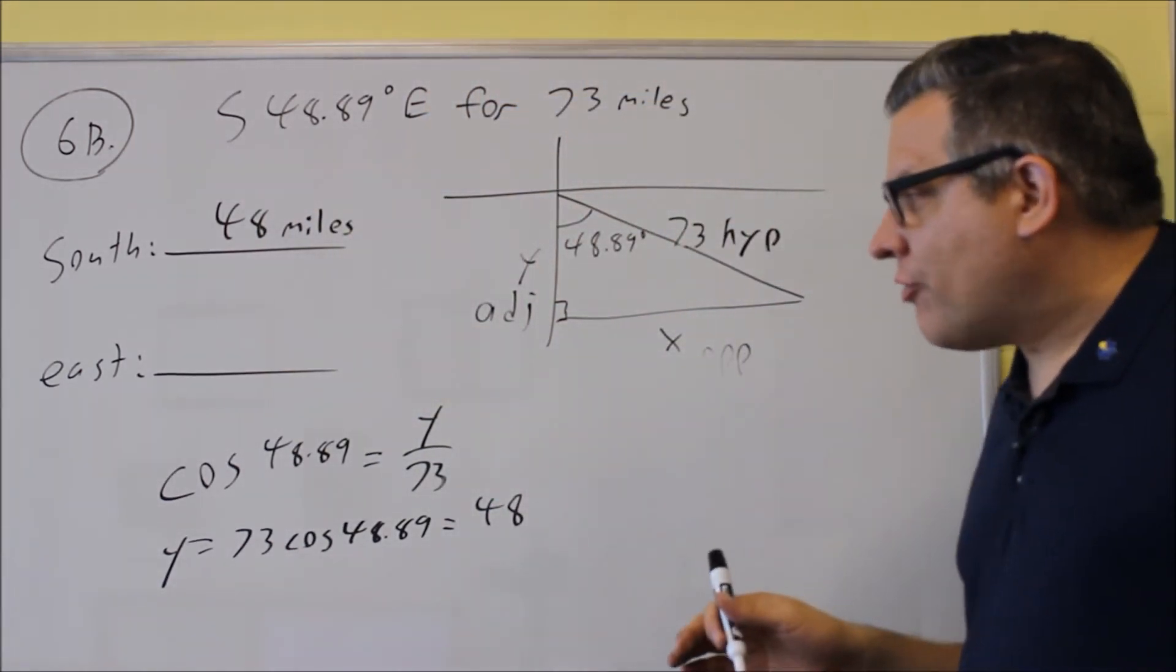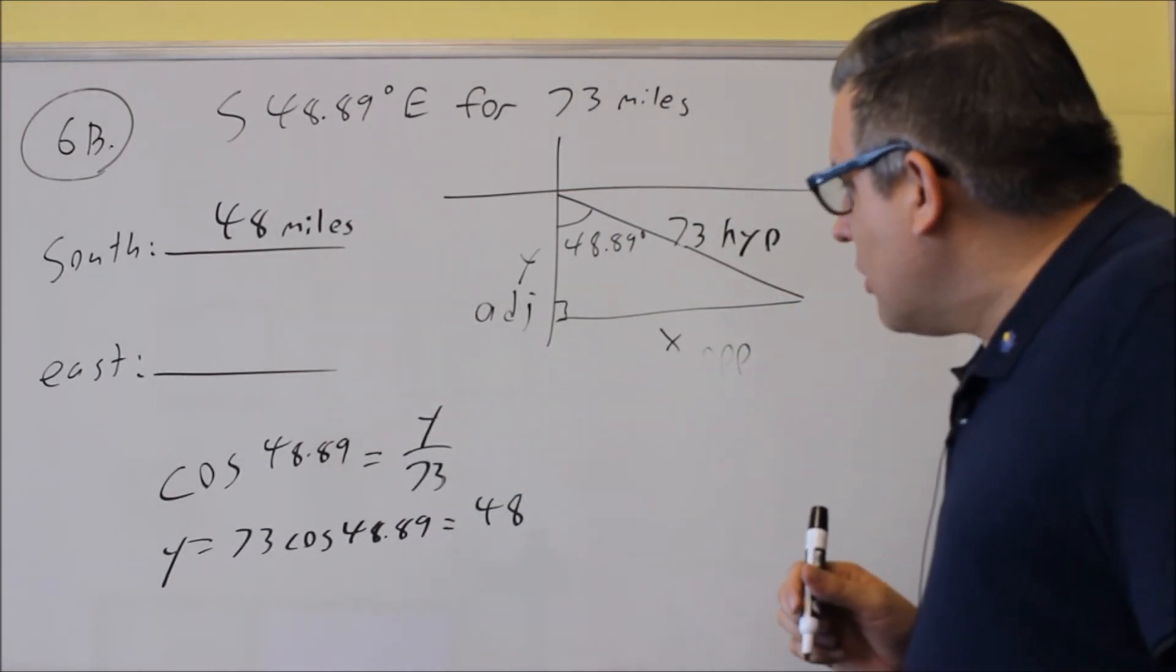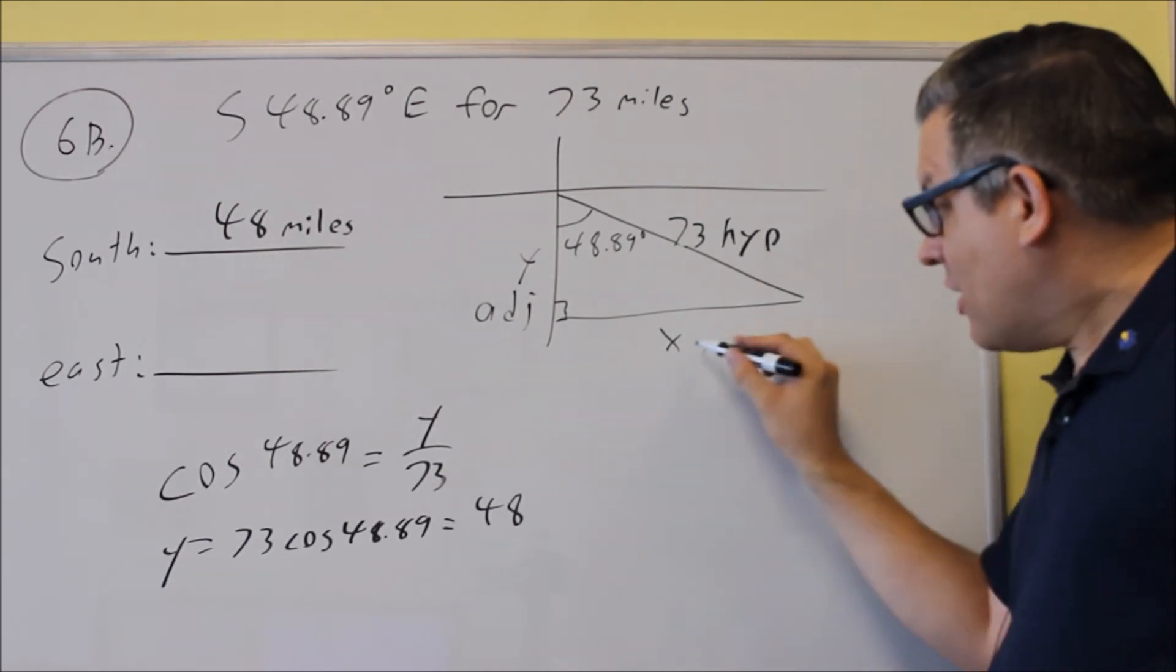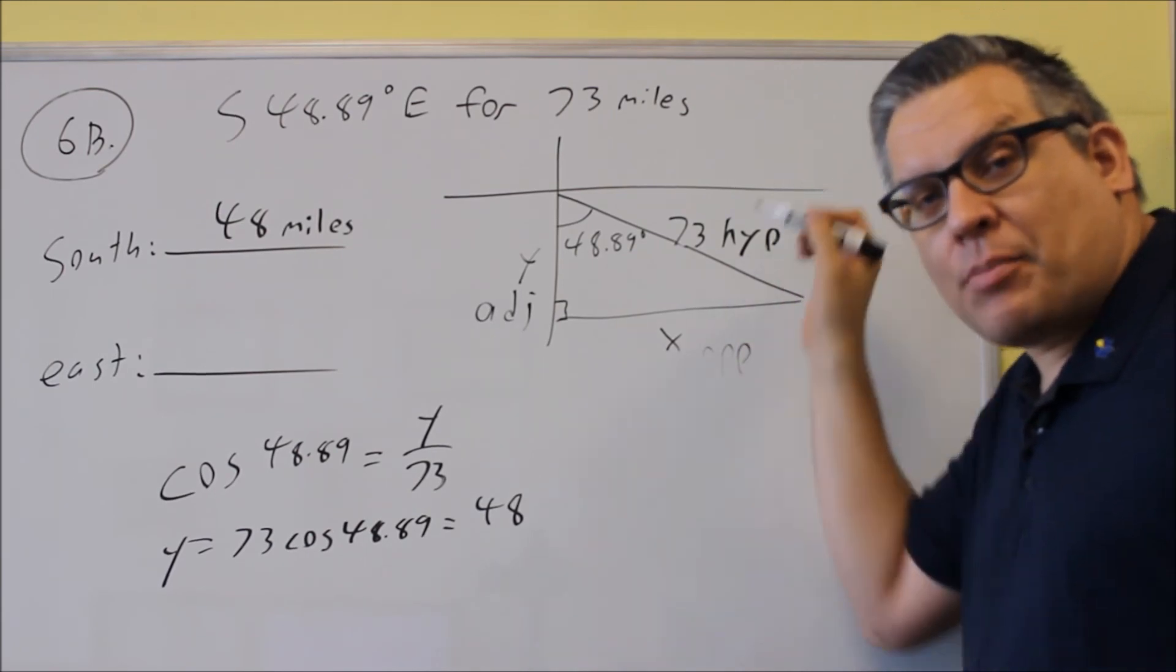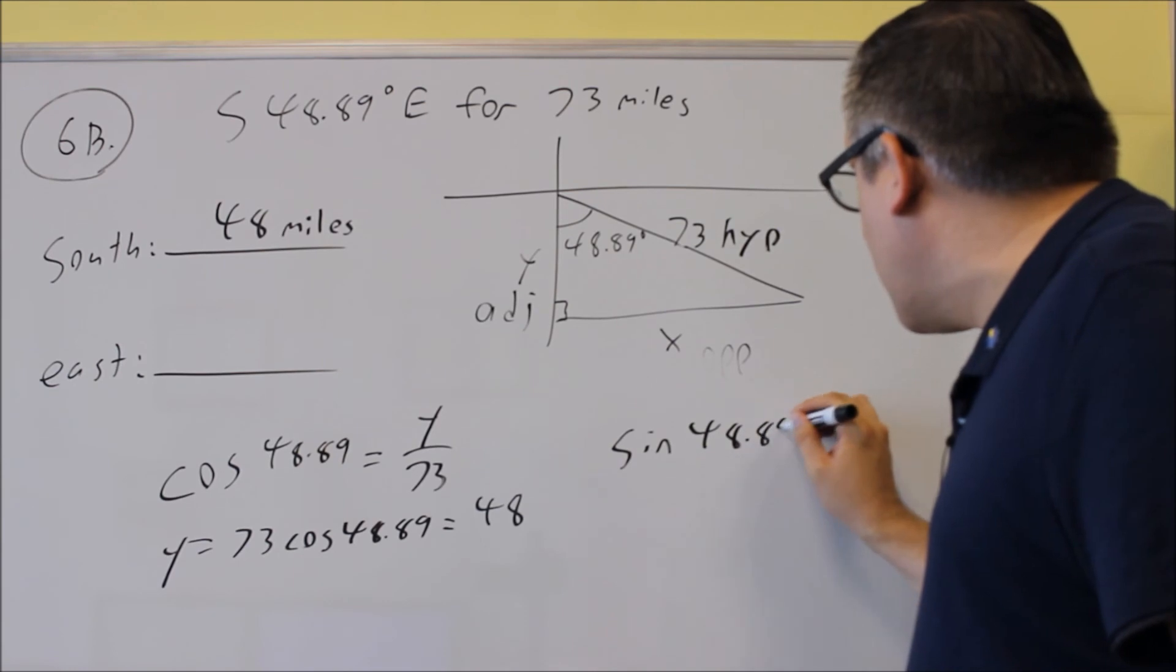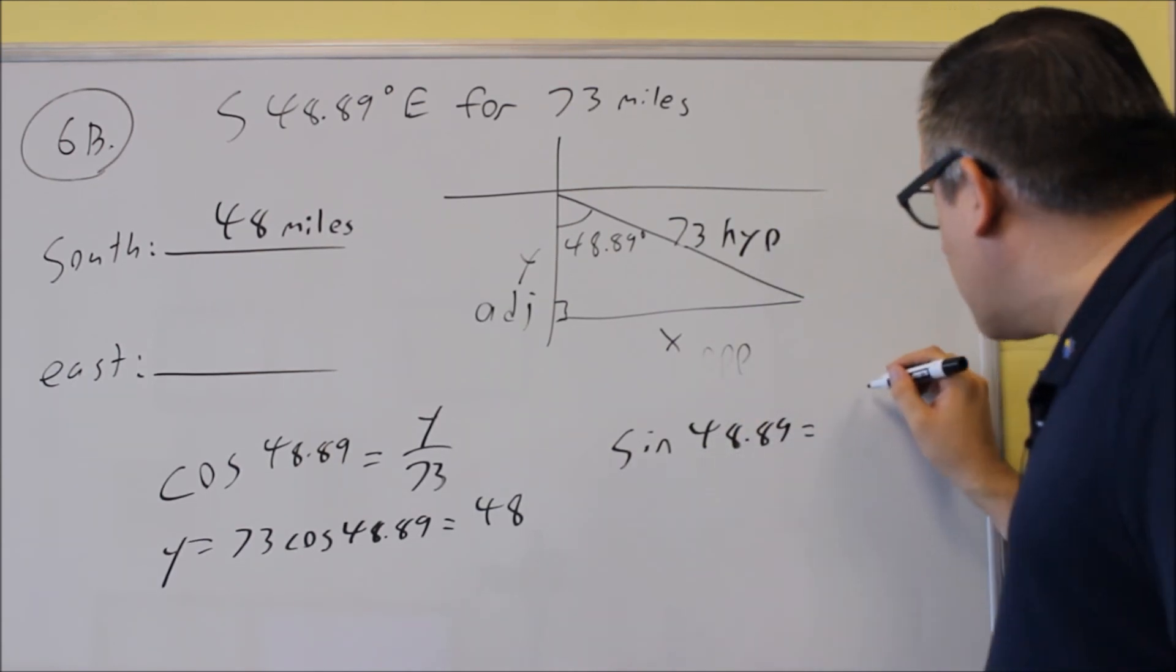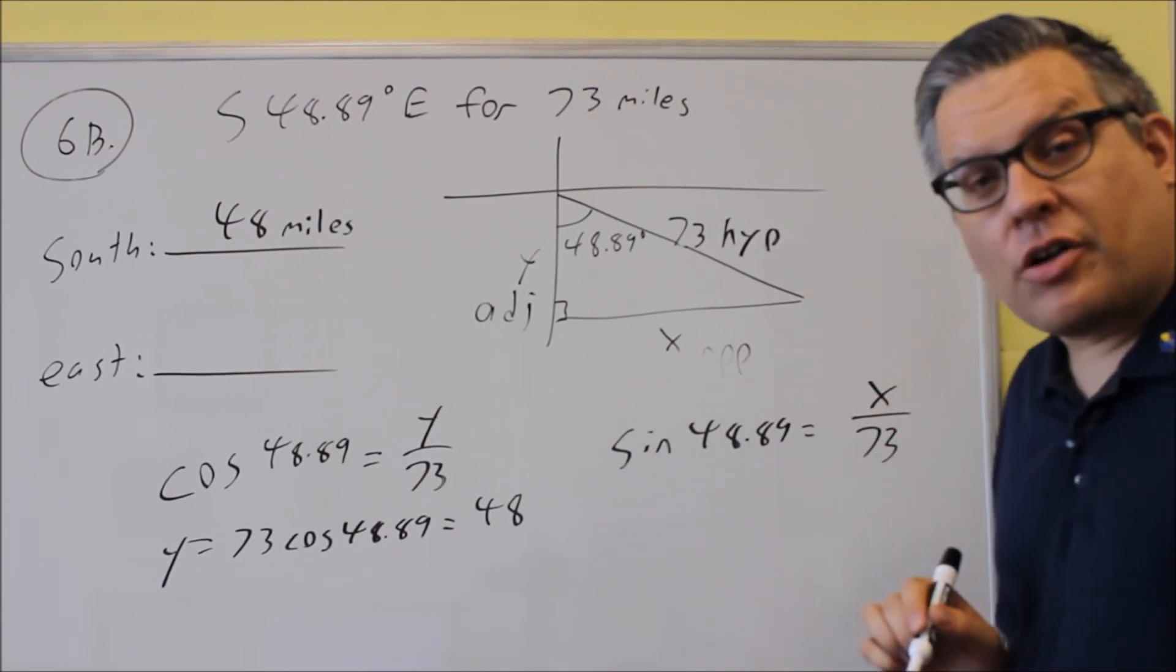Next, we want to solve for the x. That'll give us the amount going east. A trig function that relates to that would be, we need to find one that relates an opposite side. That's x. The side we're given is hypotenuse. So opposite and hypotenuse, we're going to use sine.